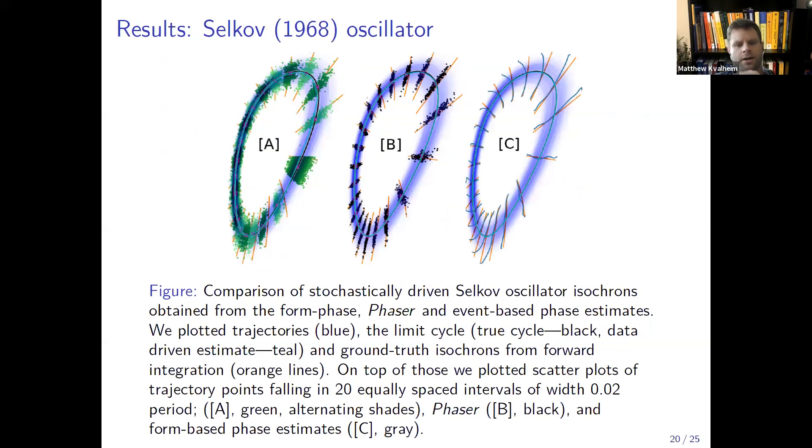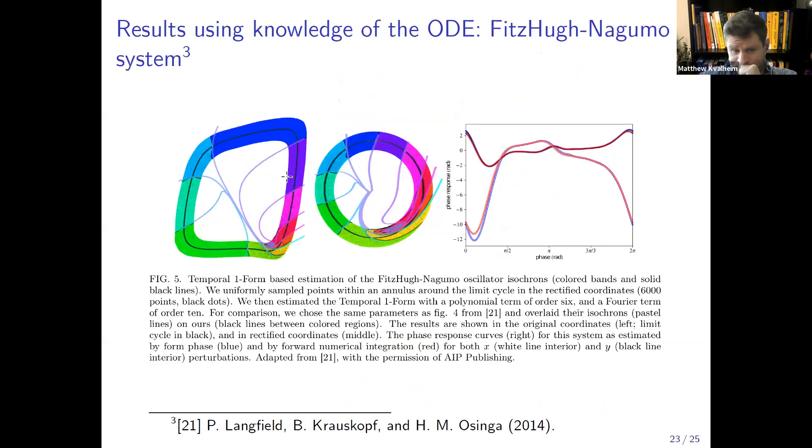So I'll just finish with some eye candy of results. Here's our algorithm run on this Selkov glycolysis oscillator. I'll have to just blow through these but we compare our algorithm to a few other ones here. Ours is shown on the right and the fact that you're seeing isochrones on the right but clouds of points on the left is showing that our algorithm is kind of really outperforming the other ones.